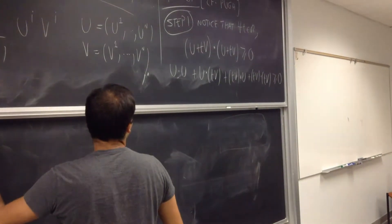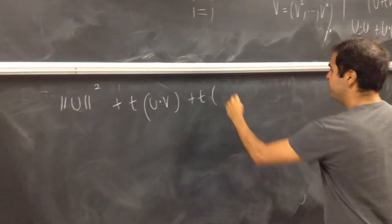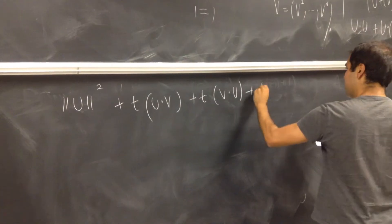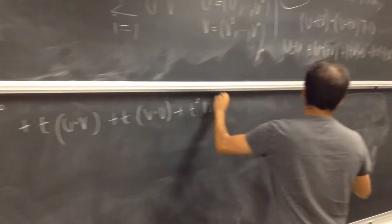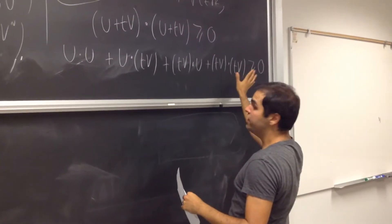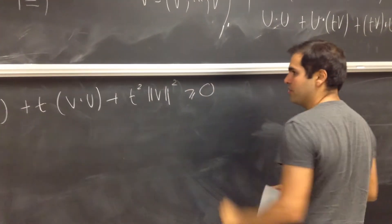Would not be true for complex inner product spaces. And then, tv dot u plus t squared length of v squared. Again, you take this t out, you take this v out, and you get v dot v, which becomes length of v squared, that's greater or equal to zero.